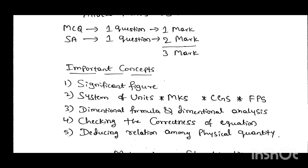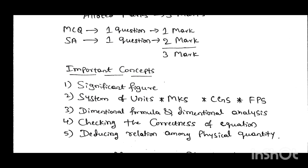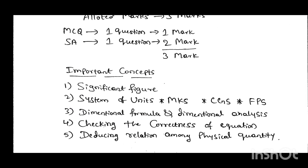Next is checking the correctness of equations, and next is deducing the relation among physical quantities. You know that any physical quantity has a dimensional formula. Checking the correctness of dimensional equations means the left-hand side and right-hand side give the same dimensions. Deducing the relation means they give a formula in which we have to obtain the physical quantity. These are the main concepts in this chapter.